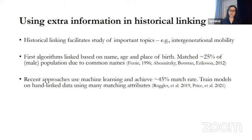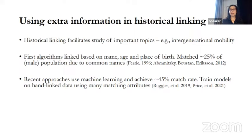More recently, there have been new linking approaches that use machine learning and are able to link close to half of the male population. These approaches take a much more kitchen sink attitude — they start with hand-linked training data from family genealogy websites, where individuals have put family members onto online family trees, and now we have millions of such records. That serves as training data, and these approaches build statistical models allowing any possible attributes to contribute to a successful match. The challenge is that these approaches are not replicable: different training data yields different matches, and they're not customizable — they're a black box.